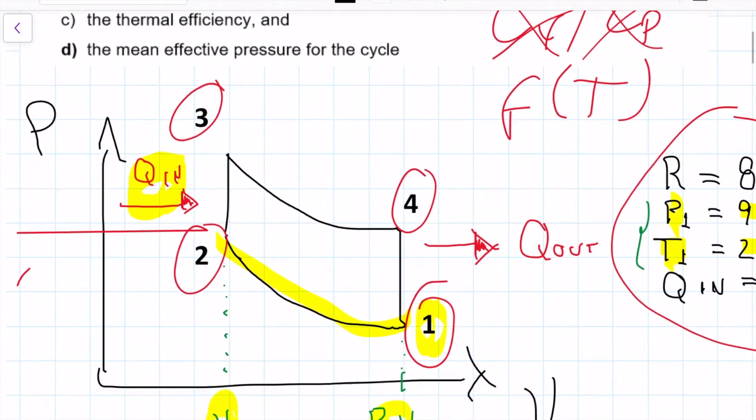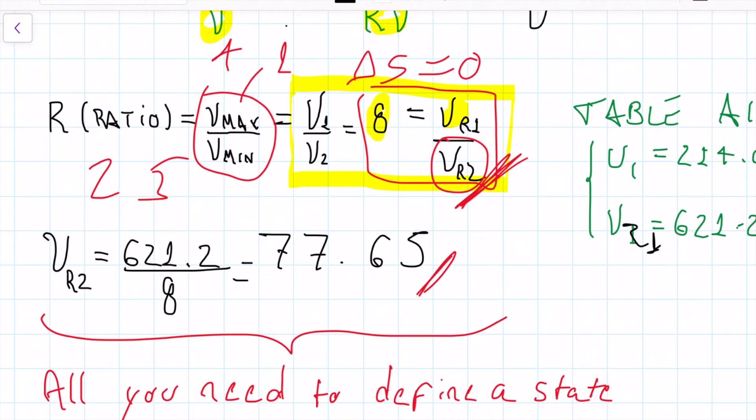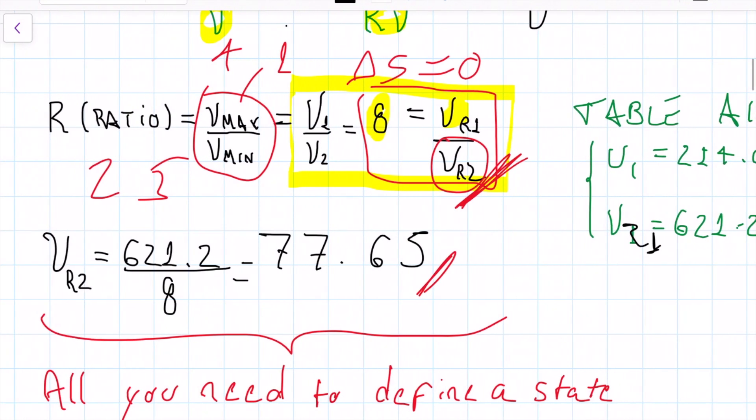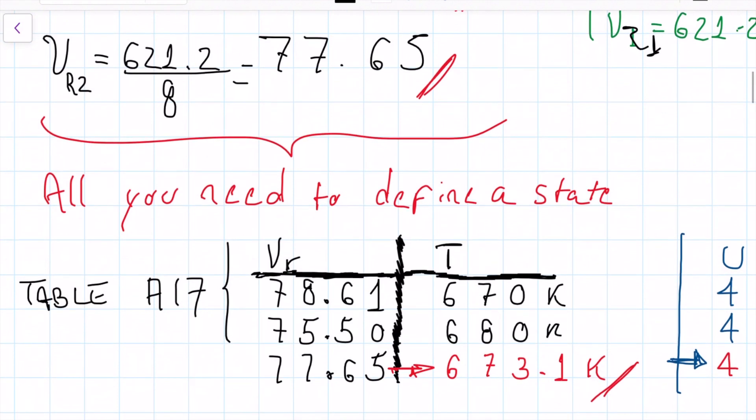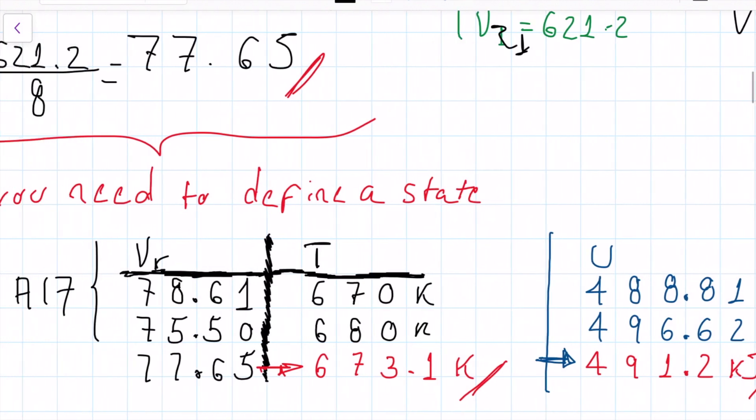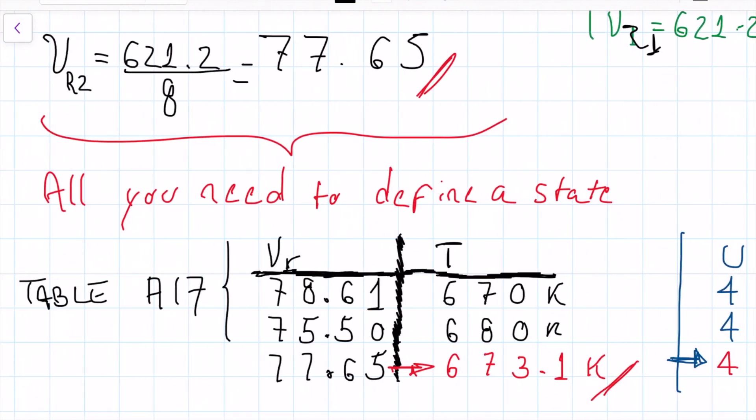I'm going to stop this video, and we're going to continue from this point on, from the point in which we have defined my first state completely. I have my internal energy, I have my VR1, I have my VR2, I have my temperature 2, I have my internal energy 2. So I'm going to stop this video, and we'll continue the next video only talking about solving A, B, C, and D for this problem.